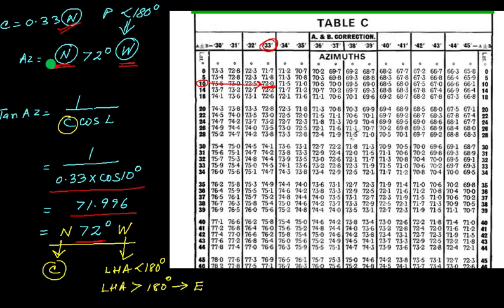The naming is the same: the first part is according to C, which is north. The second part is according to LHA — if less than 180 degrees it is west, if more than 180 degrees it is east. And that is how we can compute azimuth.